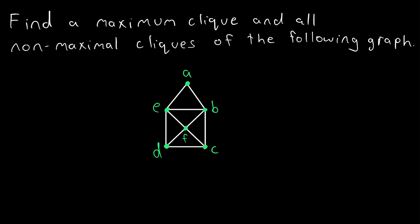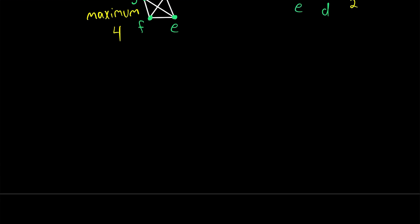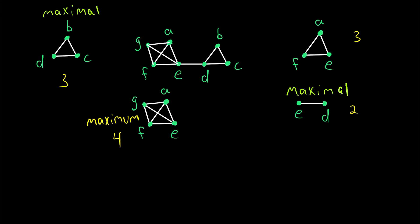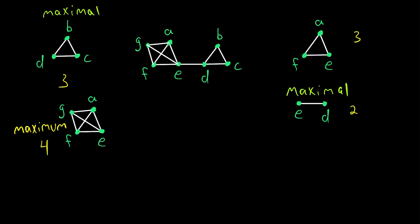I hope this video helped you understand a bit more about maximum and maximal cliques. Oh, and one last thing I should mention. The number of vertices in a maximum clique of a graph is called that graph's clique number. So, if we call this graph G, the clique number, denoted little omega of G is equal to four. The number of vertices in a maximum clique.